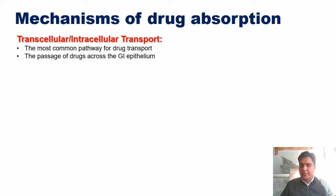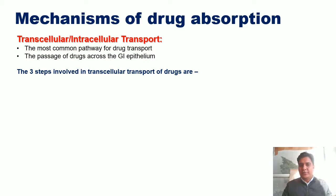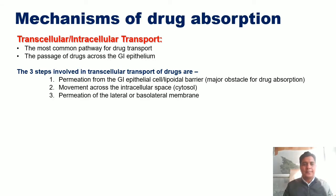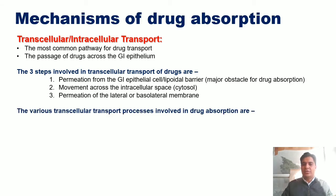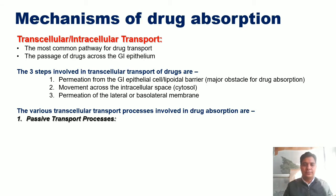Transcellular transport is the simple process by which the drug passes just through the cell across the GI epithelium. The three steps involved are: permeation of drug from the GI epithelia or lipoidal barrier, movement across the intracellular space, and permeation of the lateral or basolateral membrane. Various transcellular transport processes involved in drug absorption include passive transport.